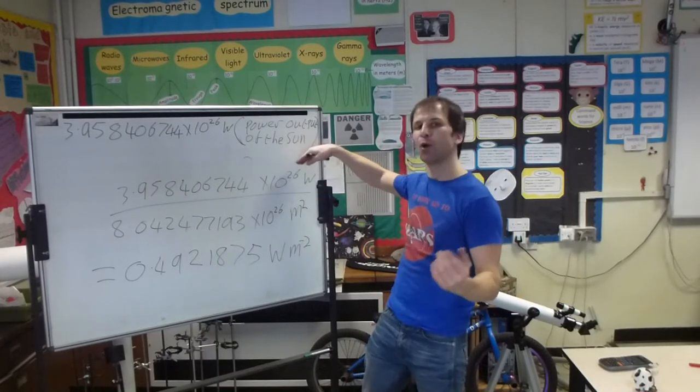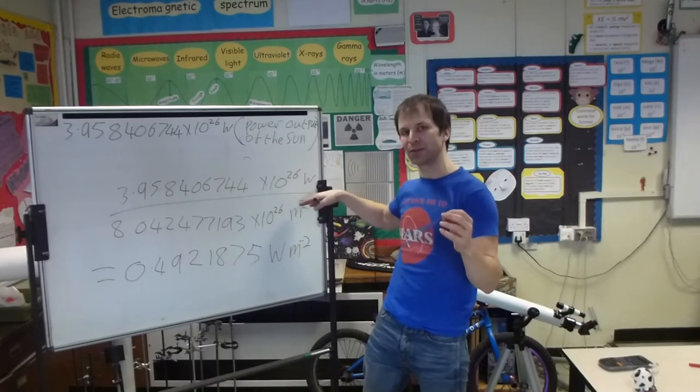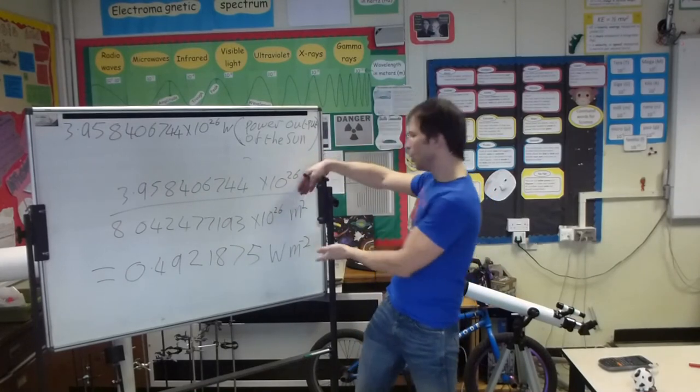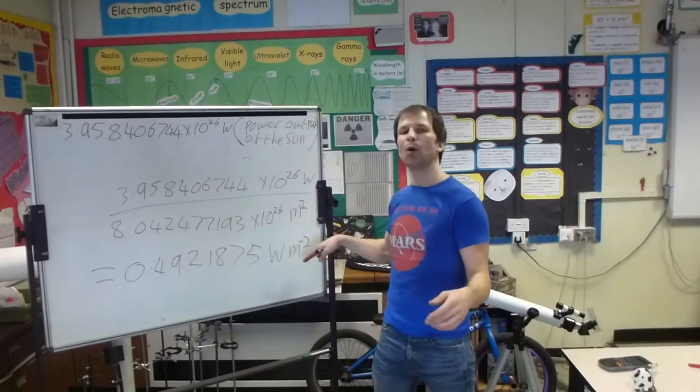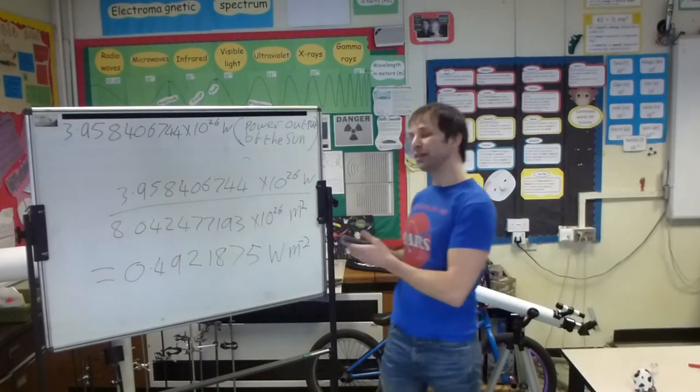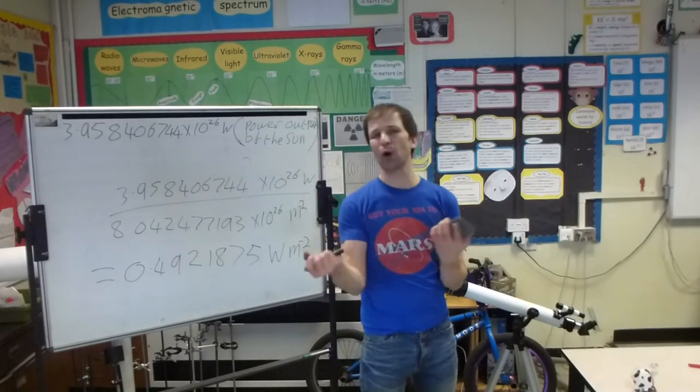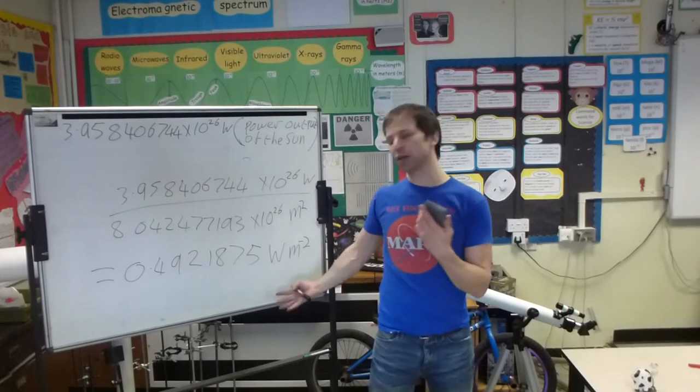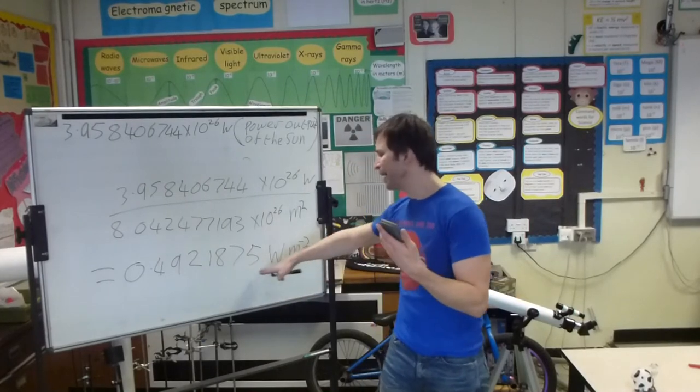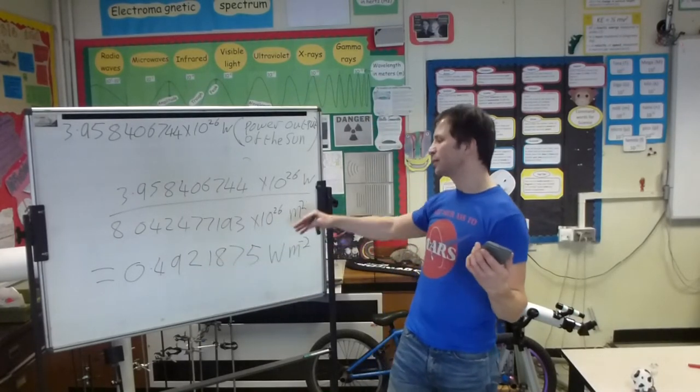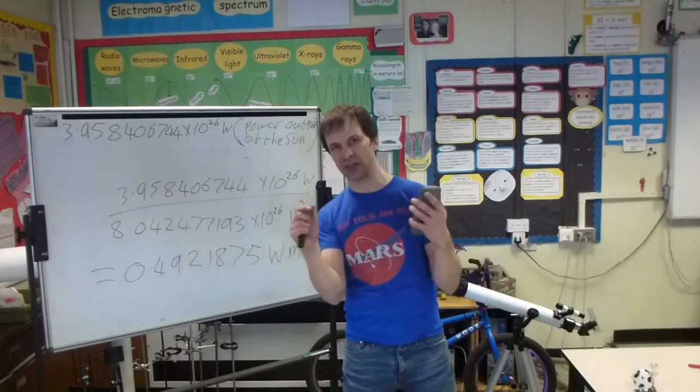If we just divide the amount of watts we've got by the square meters we've got, then you get how many watts per square meter. You'll get this many watts per square meter. What we need to do then is realize that at the start it said we needed 400 watts to actually make this spacecraft work, but we're only getting 0.4921875 watts in one square meter.